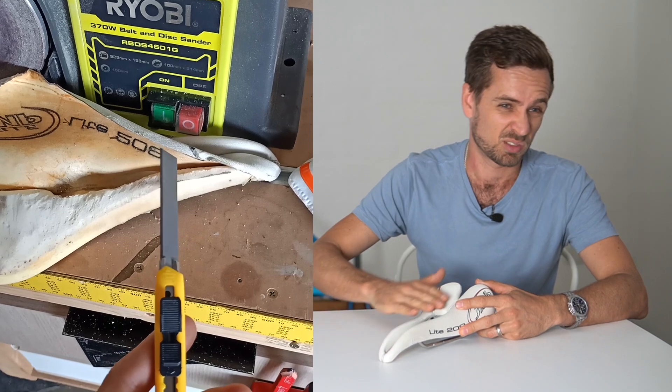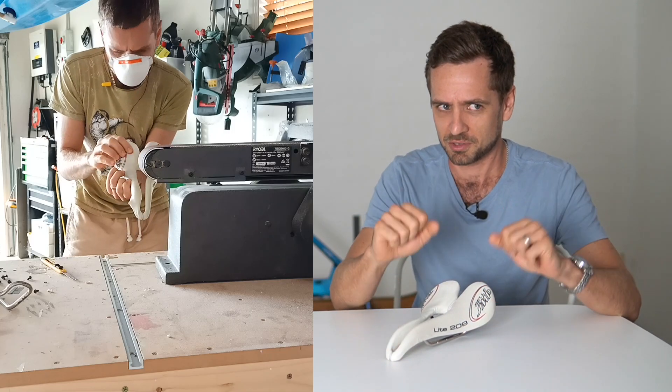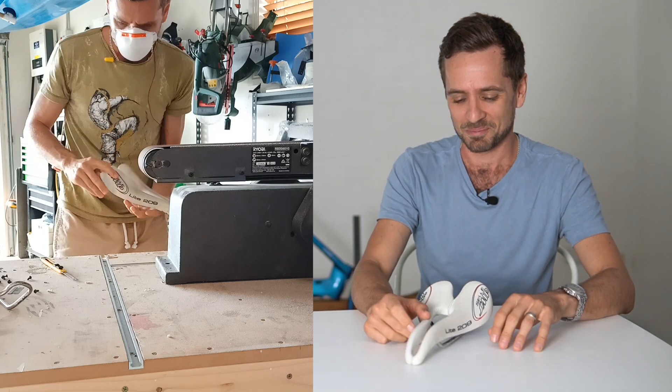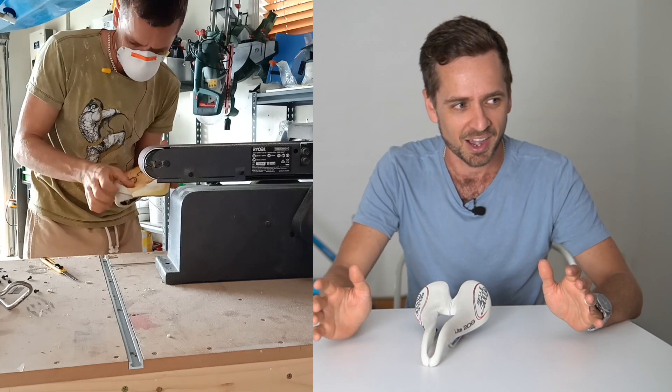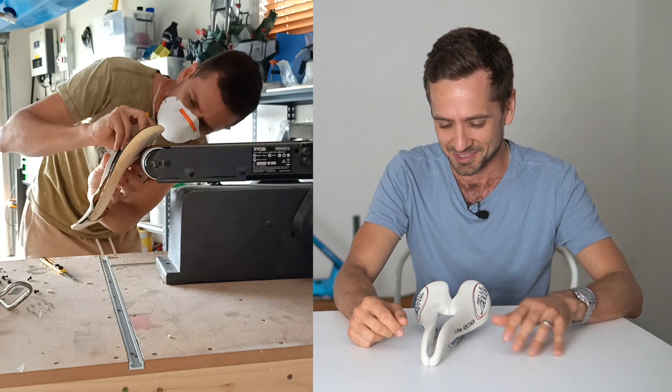And then a belt sander with some sort of 60 or 80 grit sandpaper. And I think we've got some bodgy phone footage that I took in the garage of that, which we'll show. Apologies for the quality of the footage. I have got a decent camcorder, but I didn't use it for this. This is just the phone.